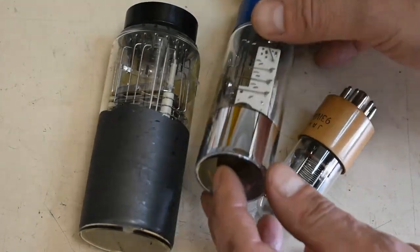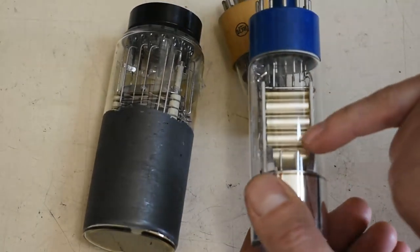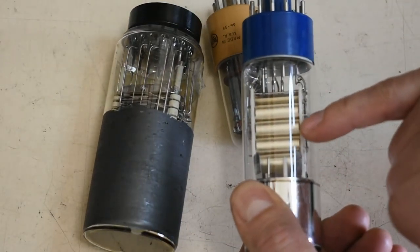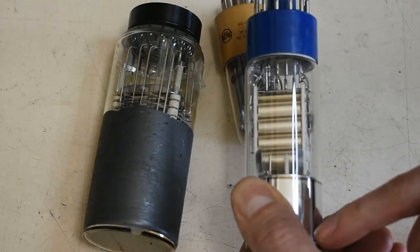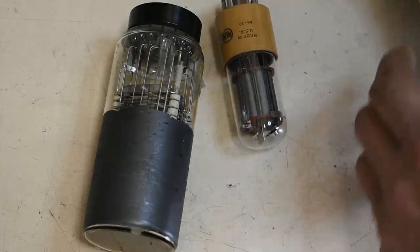You have a photocathode, in this case it's coated onto this glass front, and you have dinoids which are electrodes at different potentials that cause a cascade of electrons that come from the photocathode to the anode for detection.